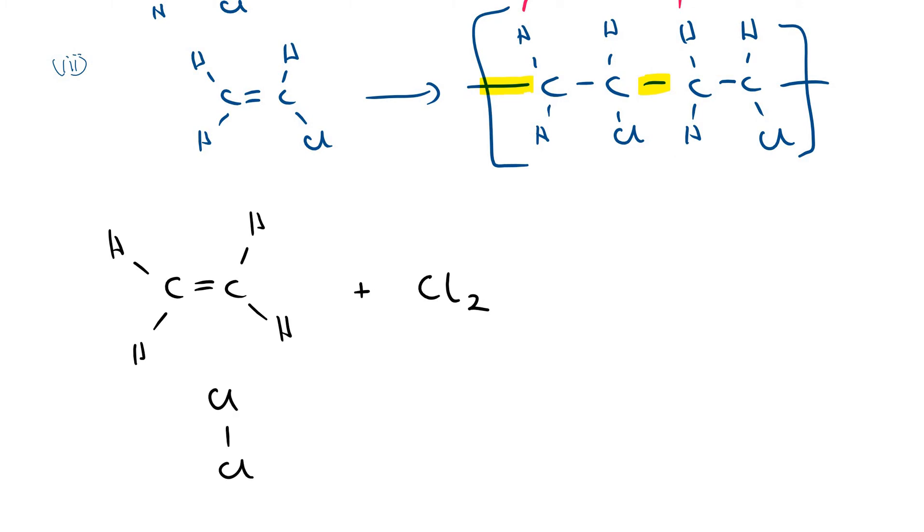I'm going to show curly arrows which indicate the movement of a pair of electrons. The alkene is electron rich around the double bond. As that alkene approaches in this direction, it approaches the nonpolar halogen Cl2.